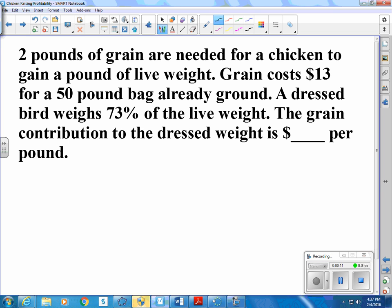So two pounds of grain are needed for a chicken to gain a pound of live weight. Grain costs $13 for a 50-pound bag already ground. A dressed bird weighs 73% of the live weight. So the grain contribution to the dressed weight is what price per pound.